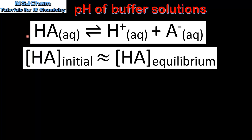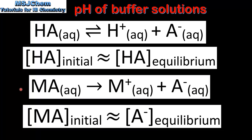When using the Henderson-Hasselbalch equation we make two assumptions. A weak acid partially dissociates, which means the equilibrium lies to the left. Because the dissociation of the weak acid is so small, the assumption we make is that the initial concentration of the weak acid is approximately equal to the equilibrium concentration of the weak acid. The second assumption is that the salt MA completely dissociates in solution, so the initial concentration of the salt is approximately equal to the equilibrium concentration of the anion.